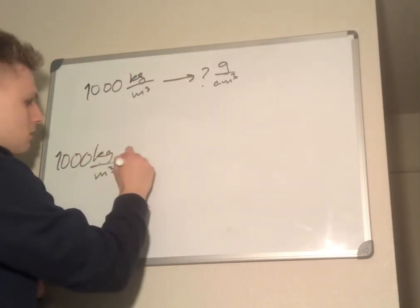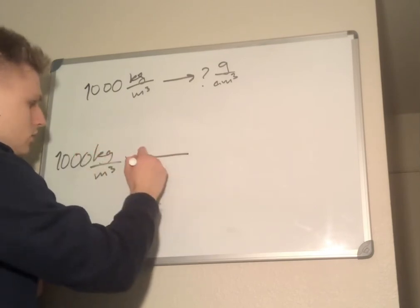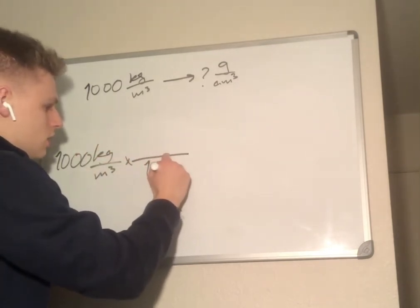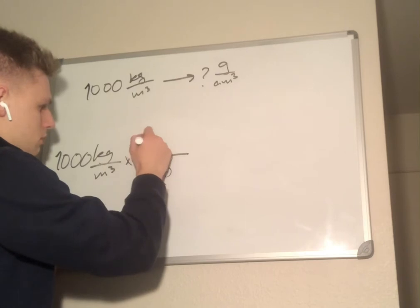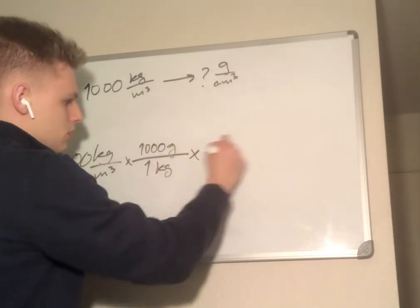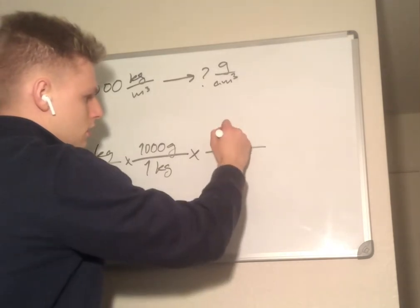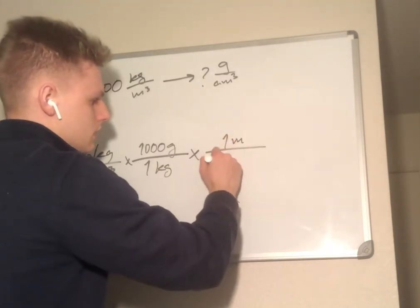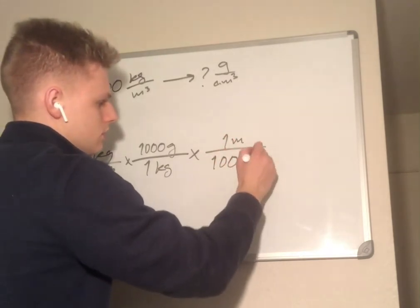1,000 kilograms per meter cubed, we're going to multiply that by a conversion ratio: 1 kilogram per every 1,000 grams. Then we multiply that by 1 meter, which is 100 centimeters in a meter.